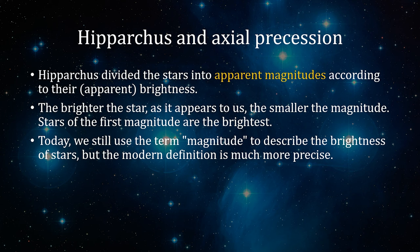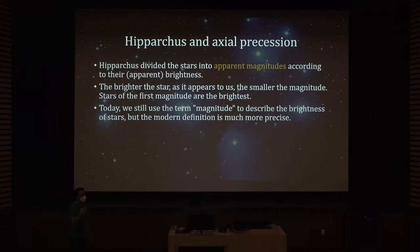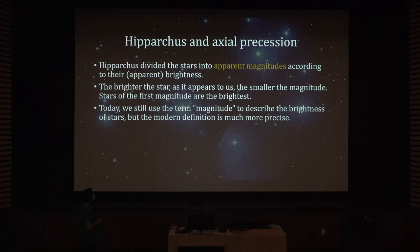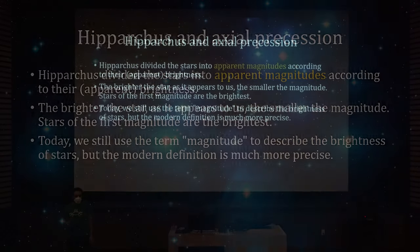The brighter the star appears to us, the smaller the magnitude. Stars of the first magnitude are the brightest, and as you go to higher magnitudes the stars become less bright. Today we still use the term magnitude to describe the brightness of stars, but the modern definition is much more precise.